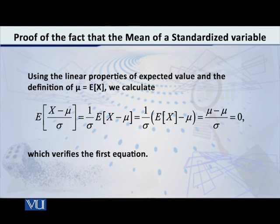First of all, let us take the expected value of (x minus mu) over sigma. Sigma is a constant, so sigma will come out. We can write it as one over sigma multiplied by the expected value of (x minus mu), or equivalently, the expected value of (x minus mu) divided by sigma.